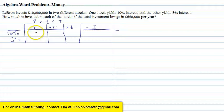Do we know the principal? Do we know the amount of money that's invested in each of the two stocks? We do not. That's what the problem is telling us to find. It says how much is invested in each of the stocks? So those are our variables in this problem, those are the unknowns. We're going to use the variable X for the 10% stock and Y for the 5% stock.